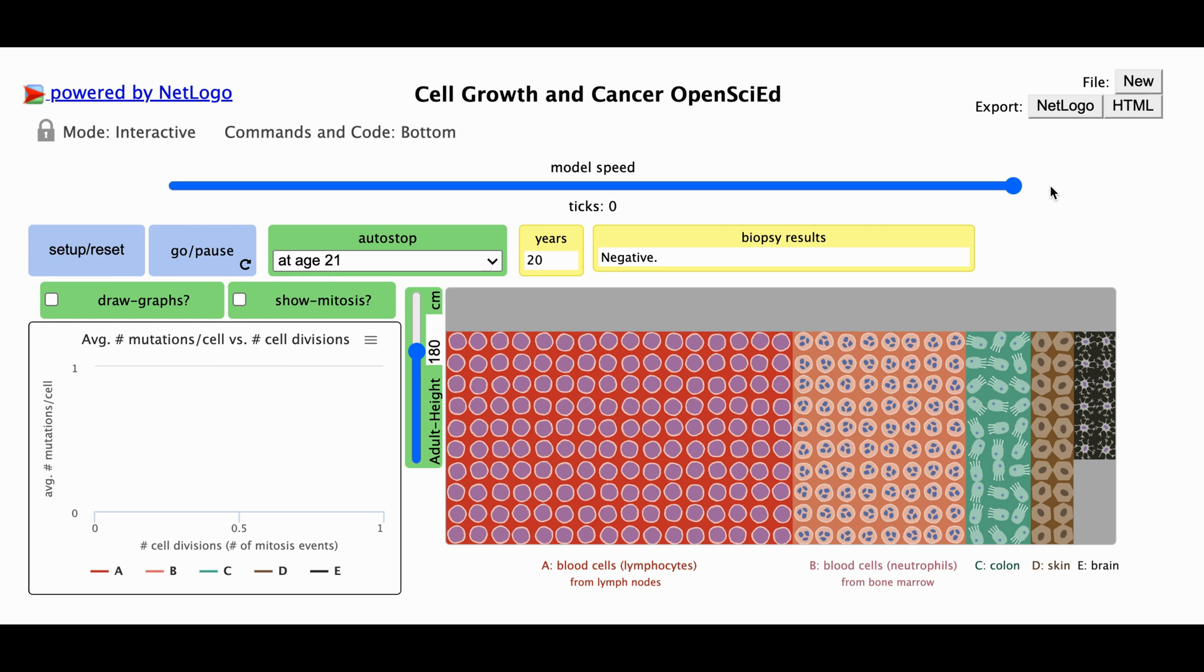Doing these things will make the simulation run much faster and will allow us to see the results of aging much more quickly. Now that you have a better idea of how to use the simulation, you can get to work on figuring out why some types of cancer are more common than others and why cancer is more common in older and taller people.